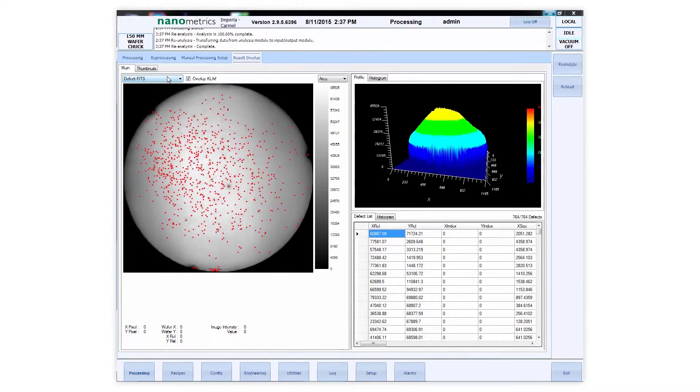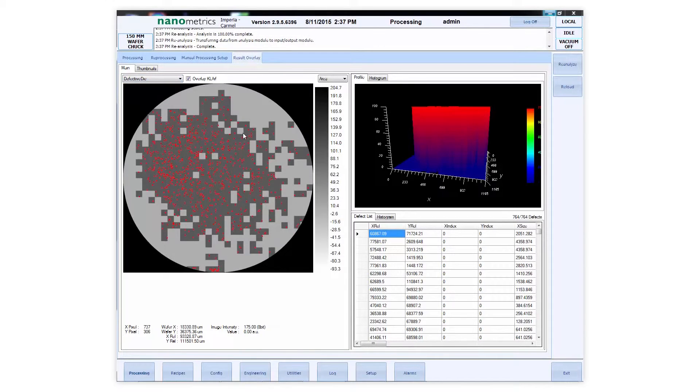Using Imperia at high resolution for reactor fine-tuning at die level can improve yield and amount of LEDs by providing a data density of 1000 times compared to PL mapping.